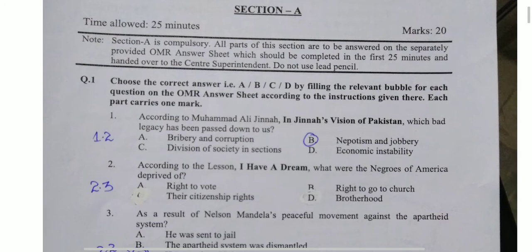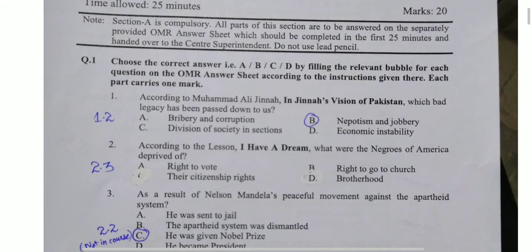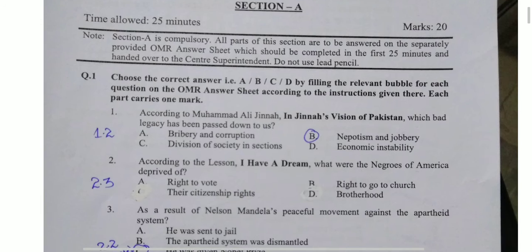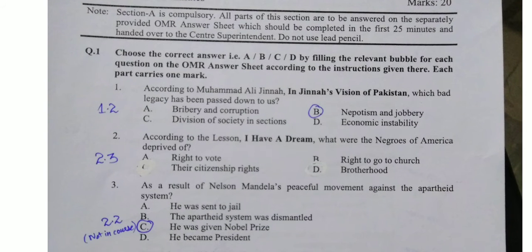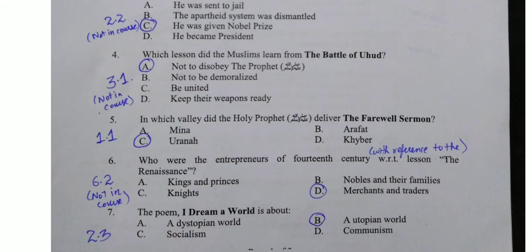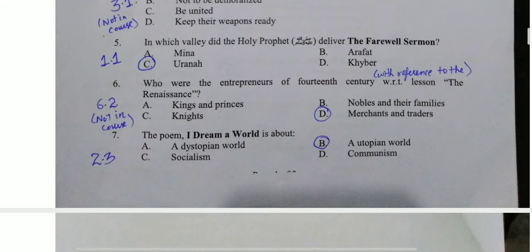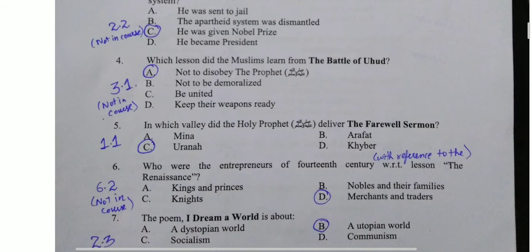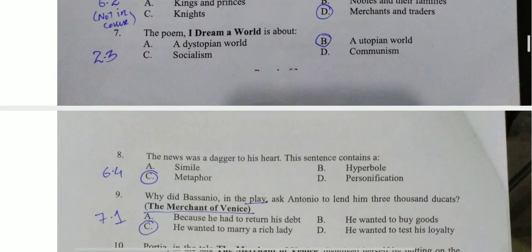Here is your paper pattern. I have marked a few answers and, side by side, I have mentioned which MCQ is in Section A and which chapter it belongs to, and whether it is in the course or not. The point is we will see which MCQs are from the textbook and which are from grammar. If we look at page one, we have 7 MCQs — these will be from chapters and will be conceptual. If you have studied the chapters in detail, you can answer those questions.